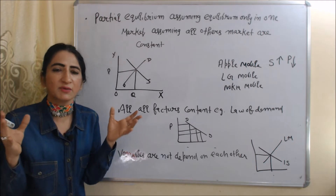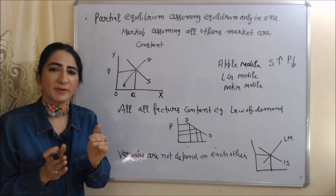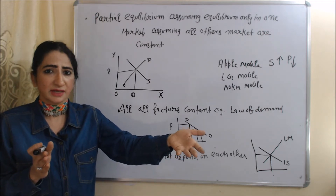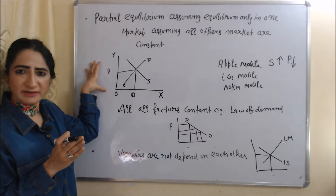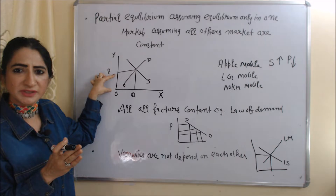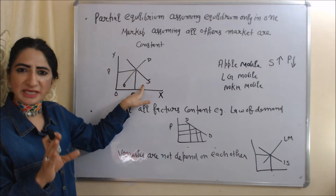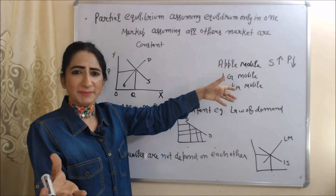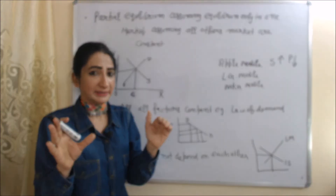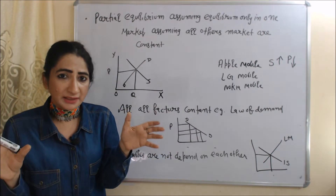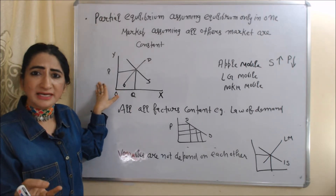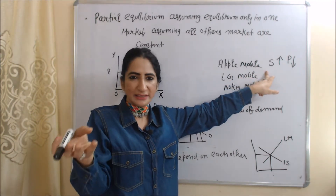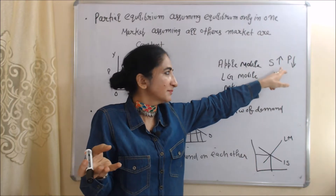With the help of some examples, we will clearly understand what partial equilibrium is. For example, partial equilibrium describes the equilibrium price of Samsung mobile based on the demand and supply of Samsung only, and assumes Apple, LG, and Nokia markets are constant — meaning their demand and supply are constant. But in reality, Samsung's prices, supply, and demand are affected by Apple, LG, and Nokia.